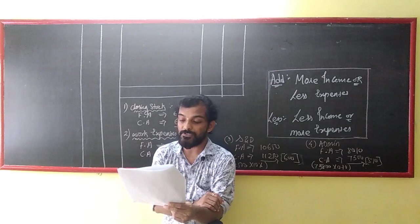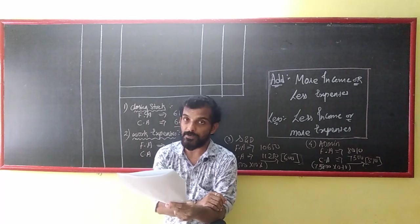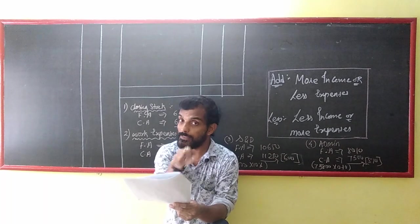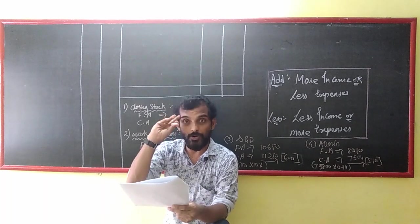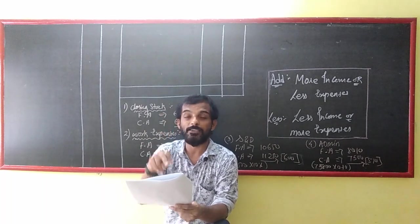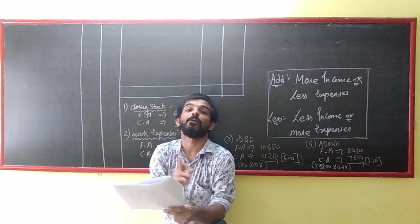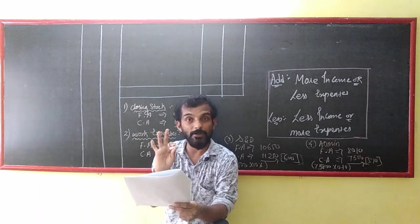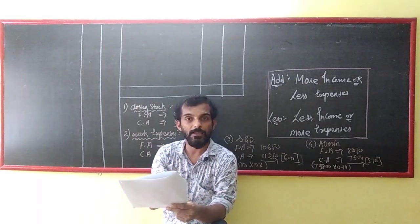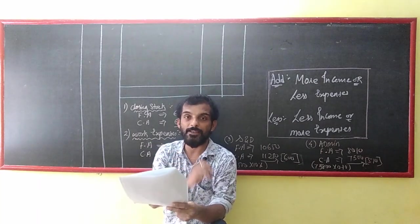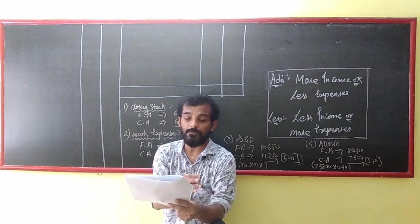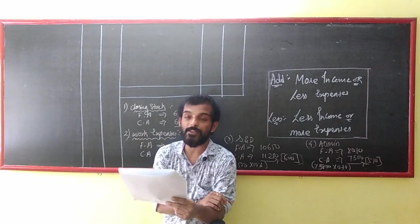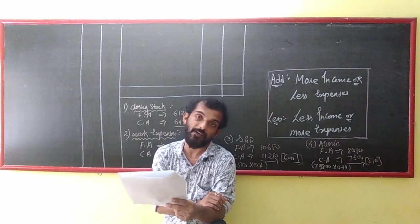Profit on sale of machinery: 3,900. This is a capital income — it is not included in cost accounts. Income that is not part of cost accounting will not appear in cost accounts. The profit as per cost accounts was 29,655.